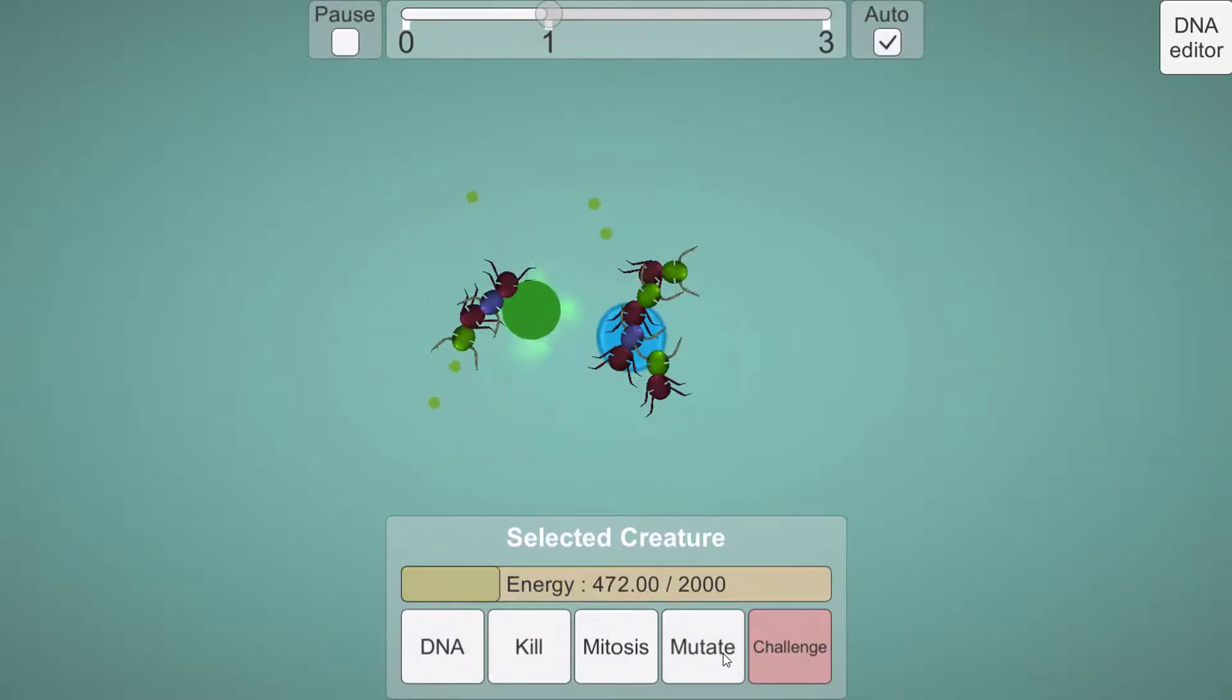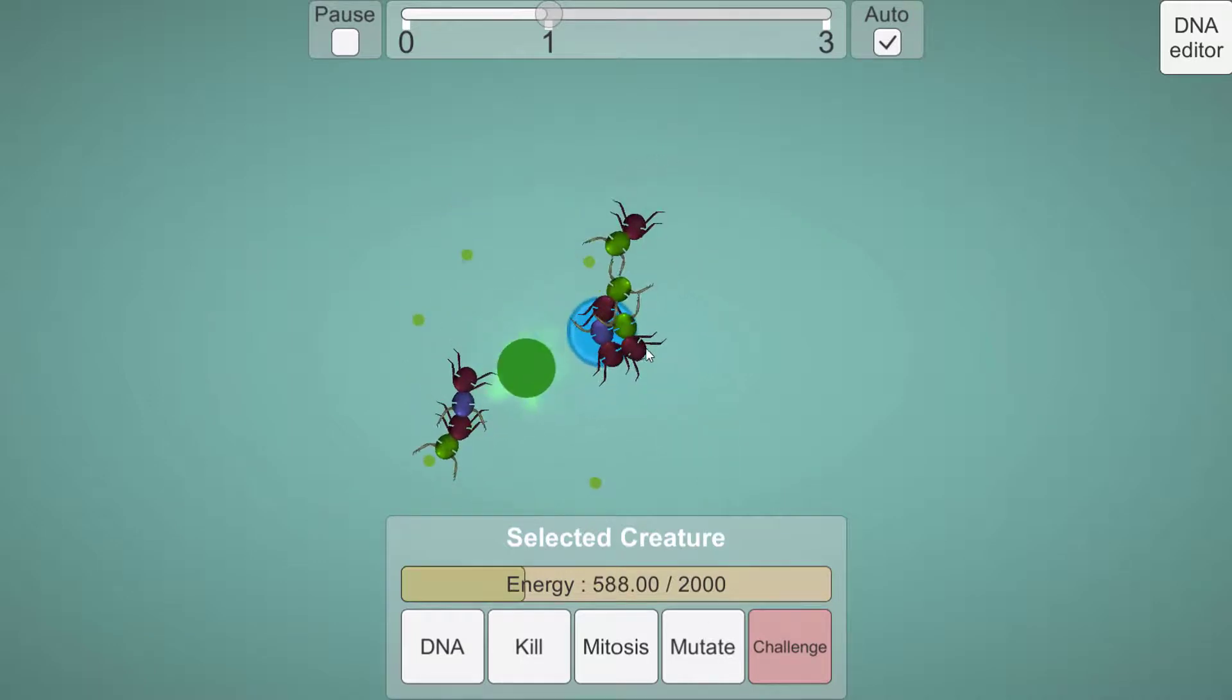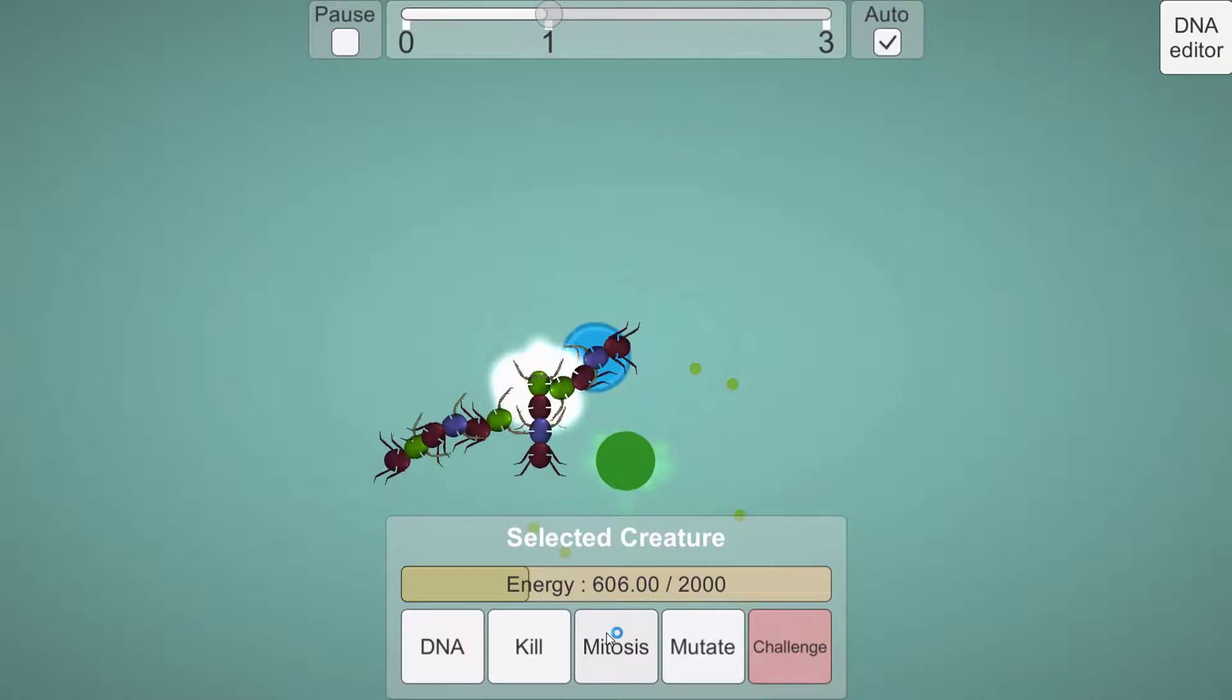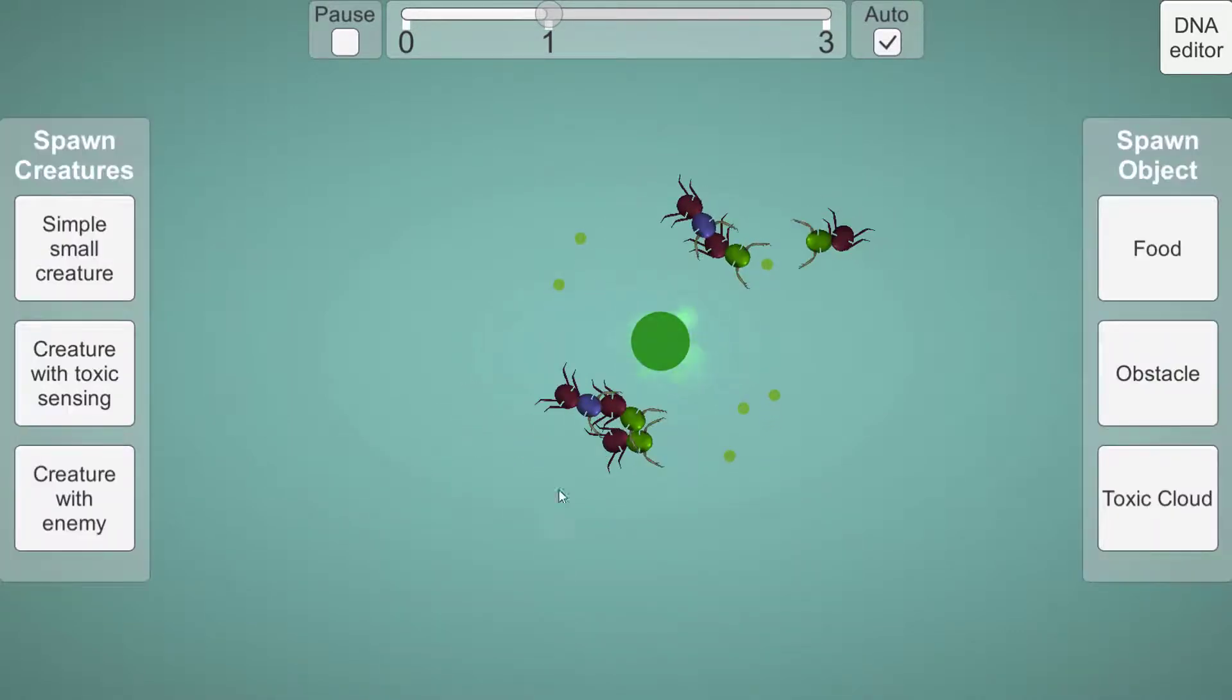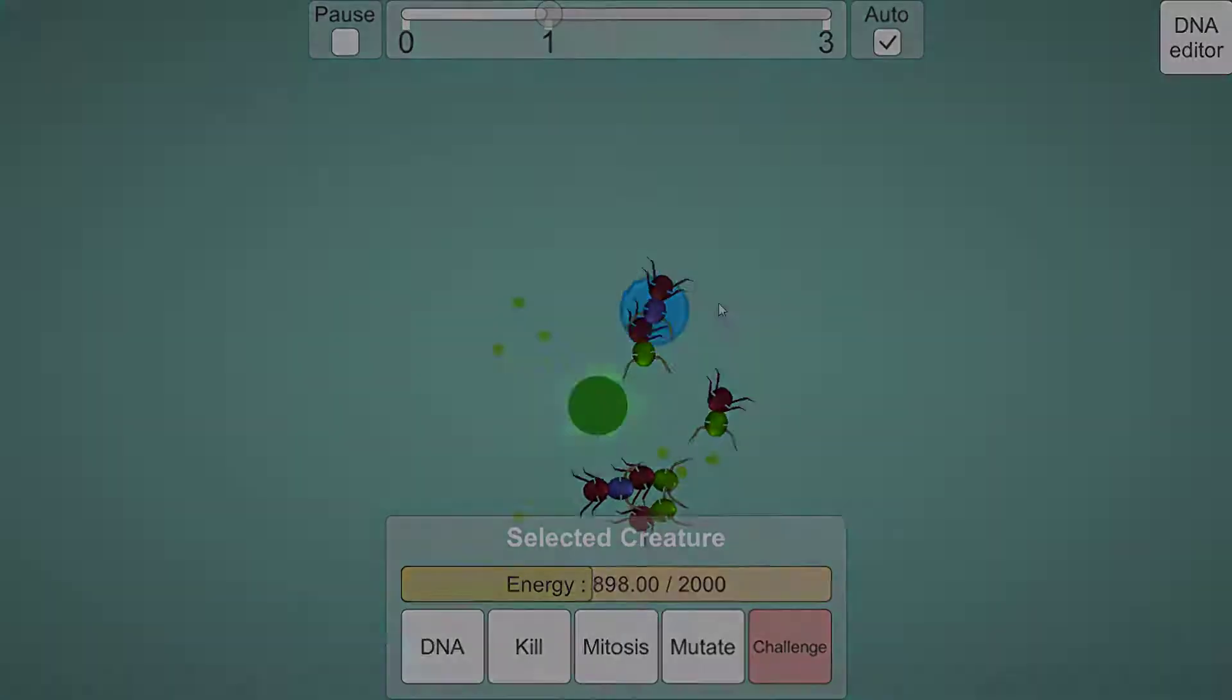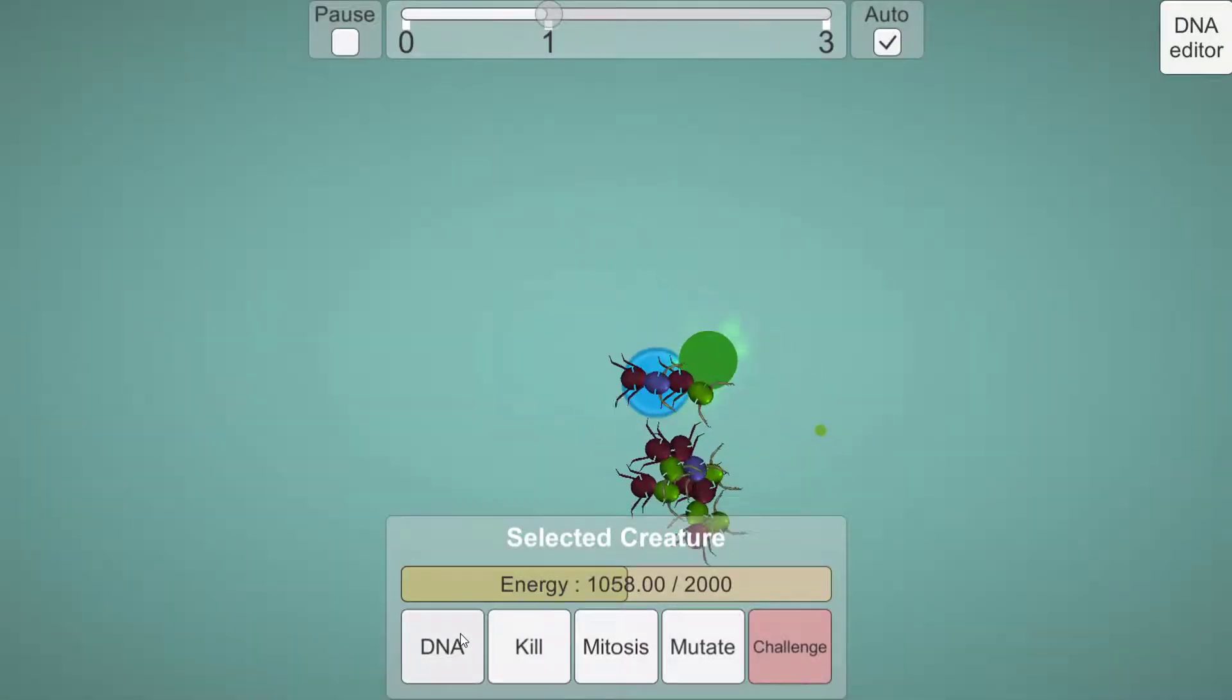When doing so, the camera will follow the creature and a new UI will appear, telling the player the creature's energy level. There are also new buttons to mutate the creature, duplicate the creature, kill the creature or show its DNA.